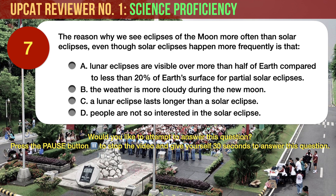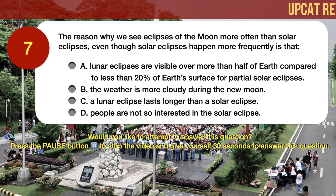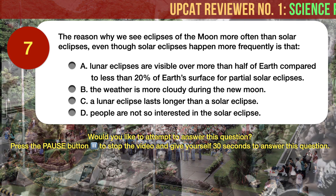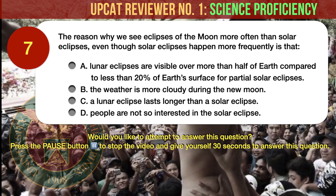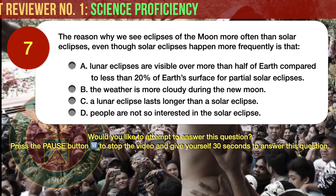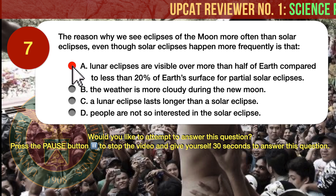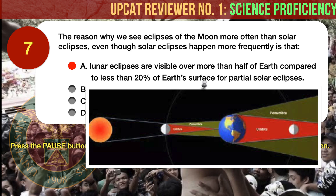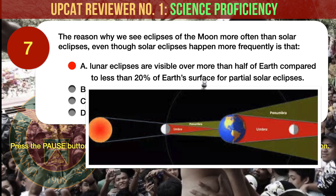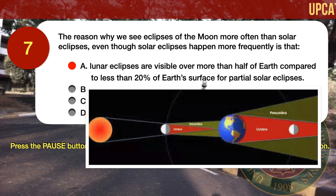Question number 7. The reason why we see eclipses of the moon more often than solar eclipses, even though solar eclipses happen more frequently, is that: A. Lunar eclipses are visible over more than half of Earth compared to less than 20% of Earth's surface for partial solar eclipses. B. The weather is more cloudy during the new moon. C. A lunar eclipse lasts longer than a solar eclipse. D. People are not so interested in the solar eclipse. The correct answer is A. Lunar eclipses are more widely visible because Earth casts a much larger shadow on the moon during a lunar eclipse than the moon casts on Earth during a solar eclipse. As a result, you are more likely to see a lunar eclipse than a solar eclipse.